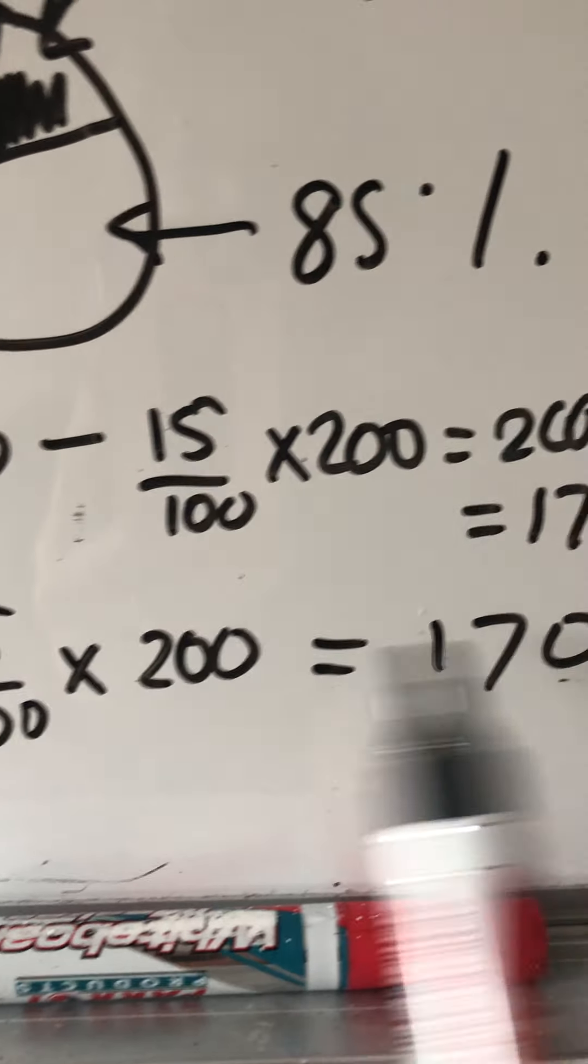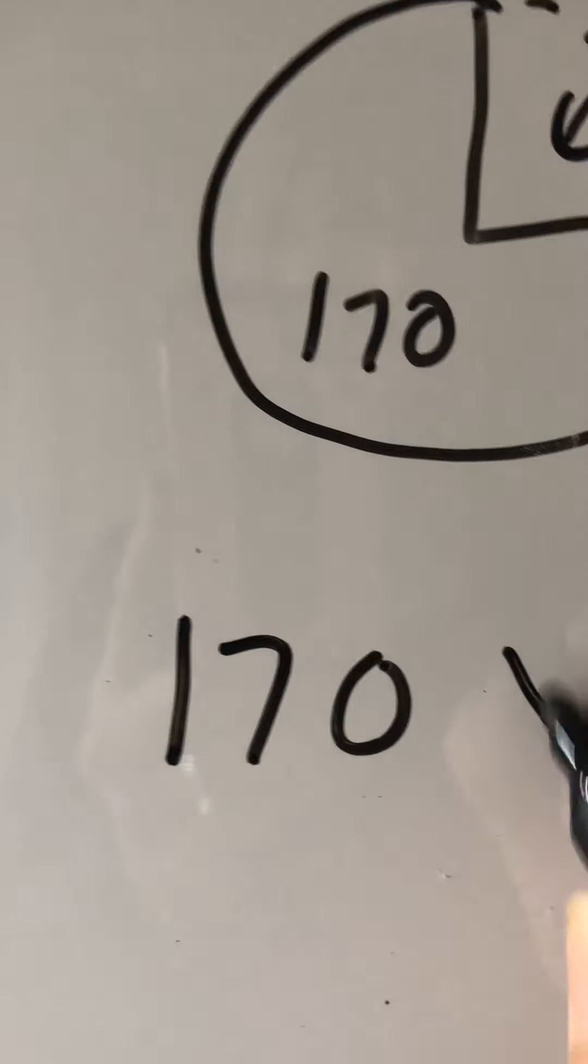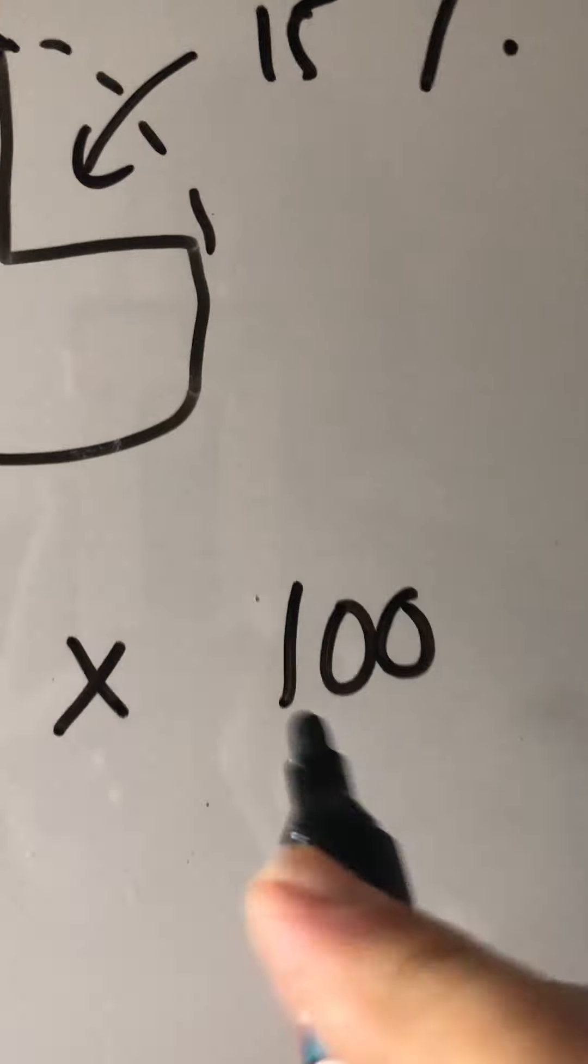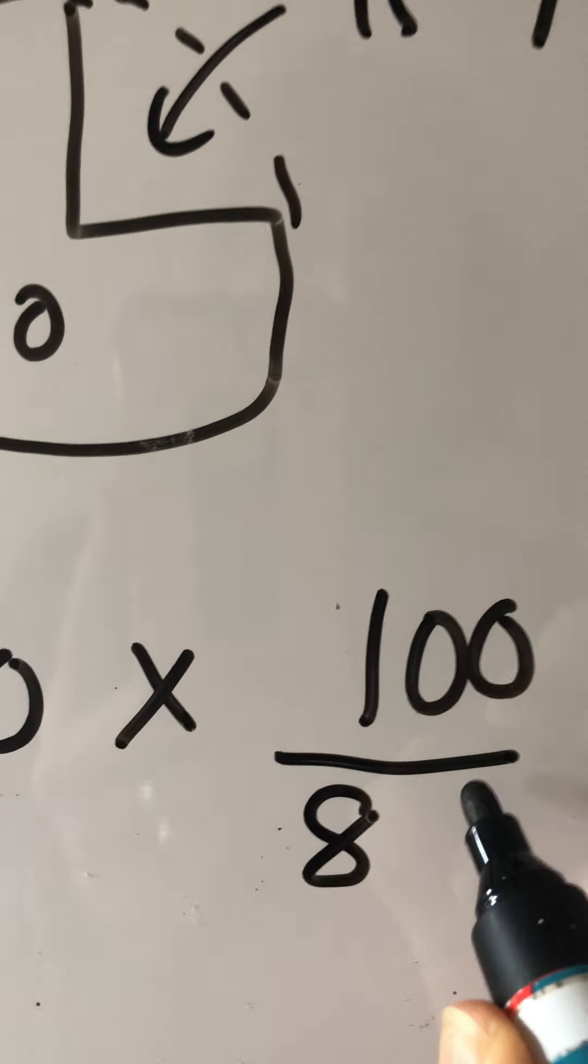So we're going to come here, 170, and we're going to times by 100 to go back to what you want, which is 100%, and divide by what you actually have, which is 85.